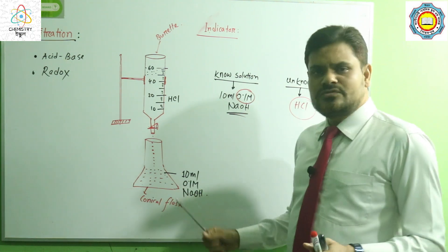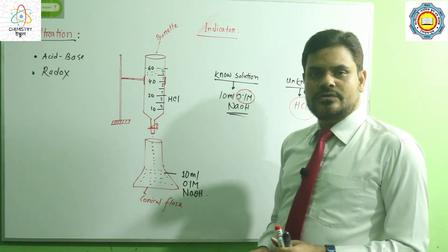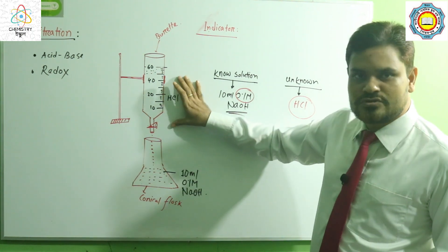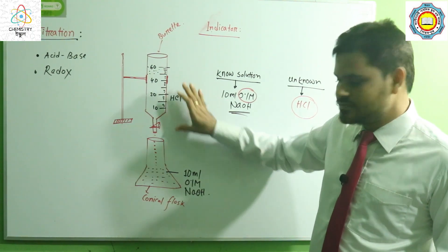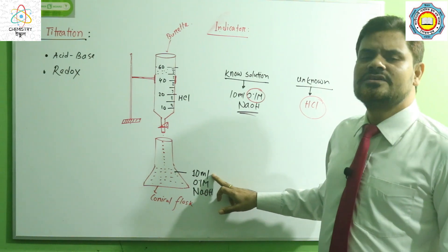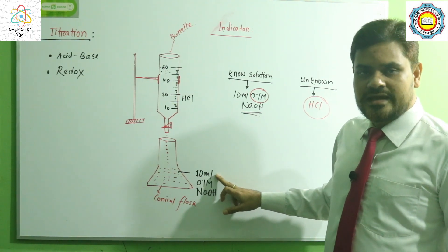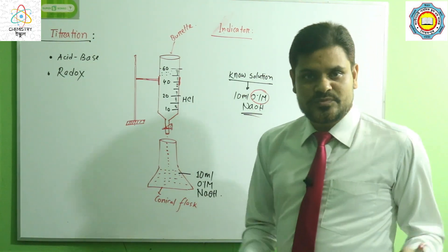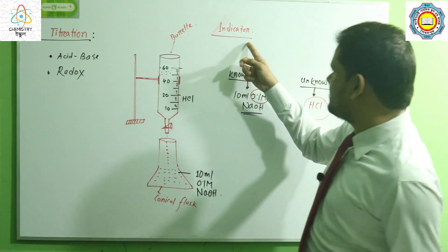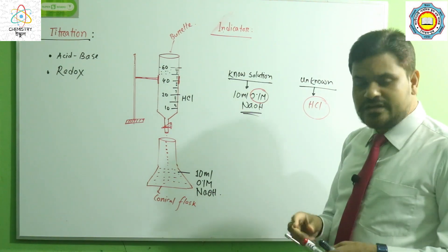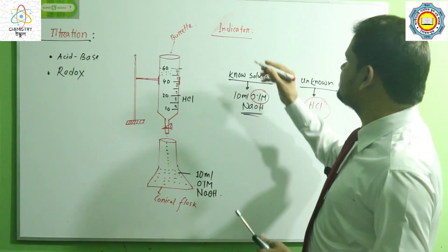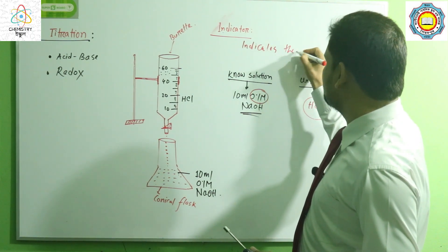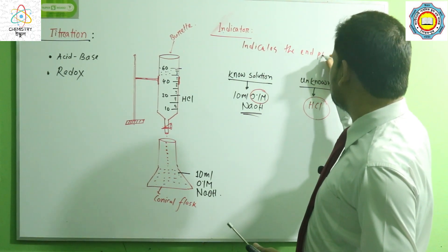When will the reaction be completed? How can we understand the reaction is completed? How much amount of hydrochloric acid is needed to neutralize 10 milliliter of sodium hydroxide? That is why we use a substance to indicate the end of the reaction. This is the indicator. The indicator indicates the endpoint — the endpoint of the reaction.